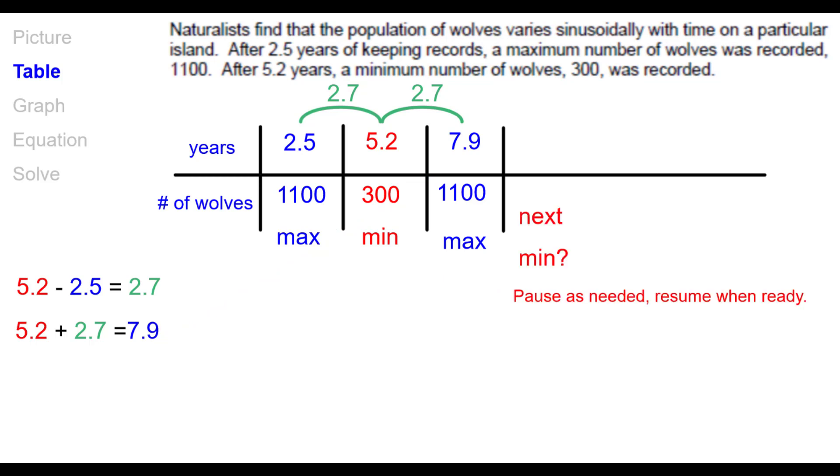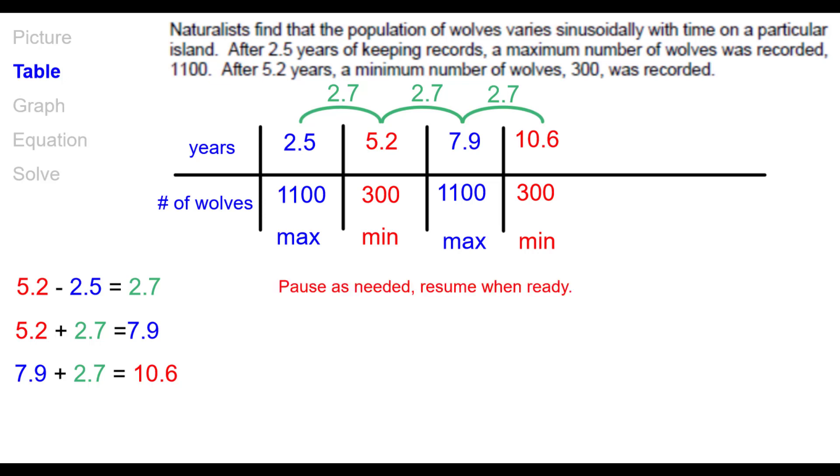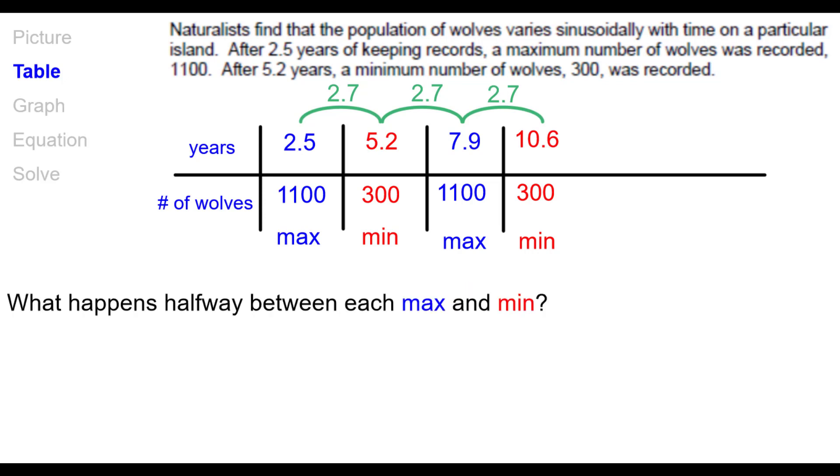The next min, pause as needed to answer this. Again, we'll do the same thing. Add 2.7 to 7.9. I'll take us to 10.6 years. And the minimum will be 300. Pause. So what happens halfway between each max and min? Think about that. Well, we get points of inflection halfway between the max and min on sinusoids. So we should be able to find the coordinates of each of these points of inflection in between the max and min. So let's go ahead and find the coordinates of this first point of inflection.